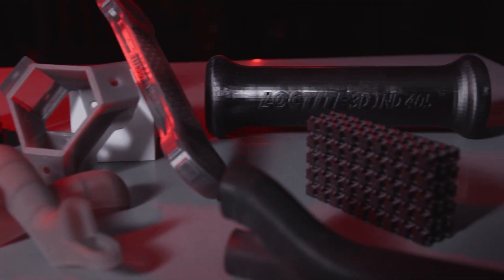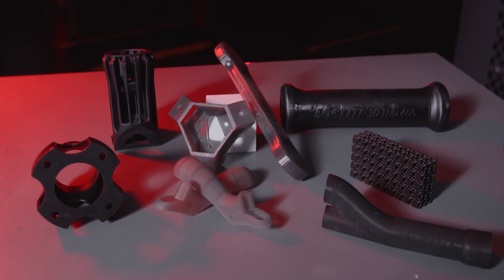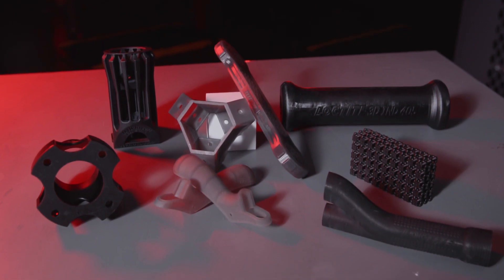Loctite 3D IND 147 is ideal for high temperature tooling and low pressure molding, prototyping of high temperature parts, and for customized molds. It can also be used for industrial, consumer goods, and automotive markets.